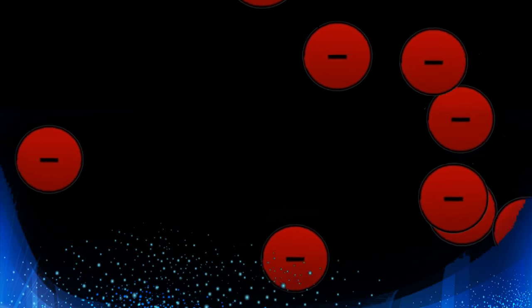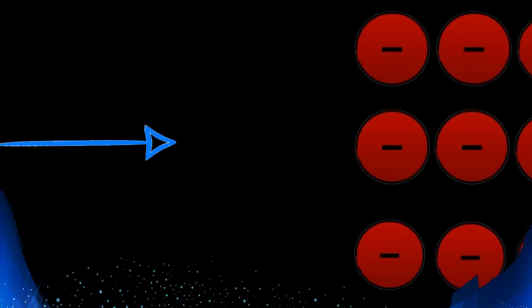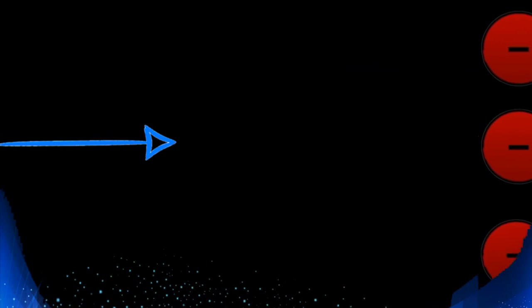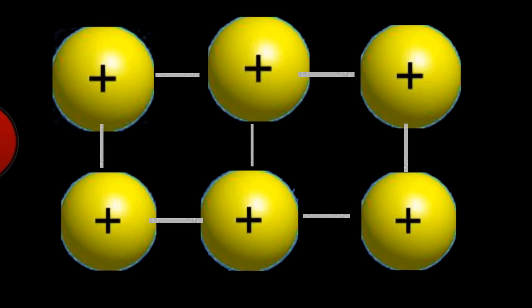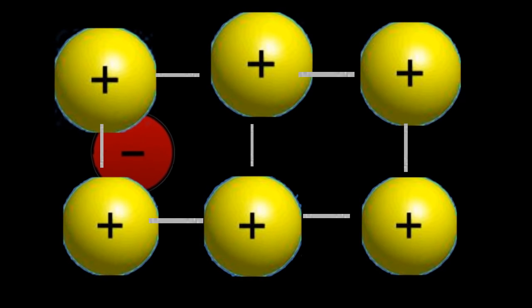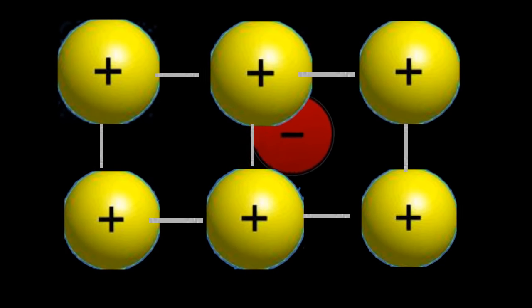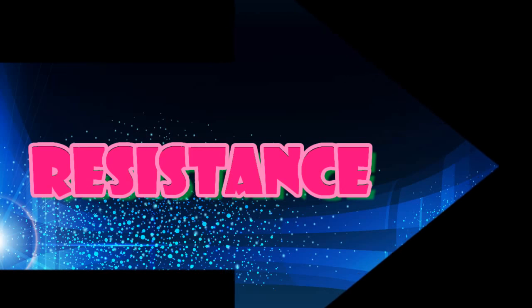So inside the wire, there are electrons undergoing random motion, which results in no net flow of charge. But what if I supply voltage? The electrons start flowing in a particular direction. But are these electrons simply flowing? Well, not really — because these electrons are facing opposition by the positive metal ions, which results in resistance.